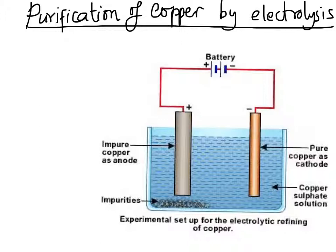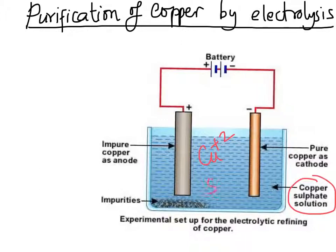Both smelting and reduction with carbon produce impure copper, which is not suitable for many applications — particularly electrical cables. Purification is done by electrolysis, passing an electrical current through the system. In this setup, impure copper forms the positive electrode (anode), connected to the positive terminal of the battery, while a pure copper rod forms the negative electrode (cathode), connected to the negative terminal. The electrolyte is a copper sulfate solution containing Cu²⁺ ions and SO₄²⁻ ions.